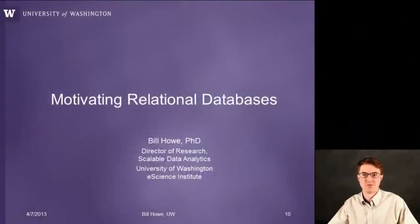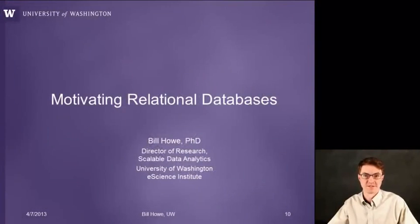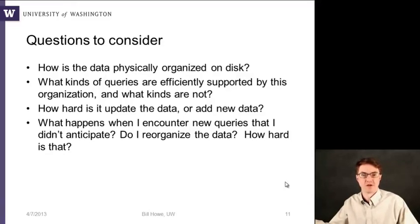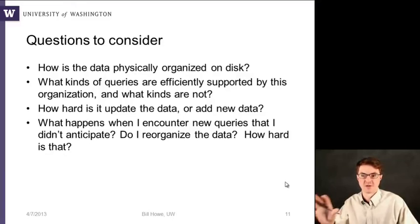Last time we talked about data models and used them to motivate databases and define the term database in a broad sense. Now I want to build on that to talk specifically about relational databases. We talked about questions you could use to reason about different ways of organizing data and evaluate them with respect to your requirements. I want to apply them to examples of different kinds of databases that end up motivating the relational model. The reason I want to go through this historical view is that you see some of these same designs being proposed in NoSQL systems, and some of the same issues — both pros and cons — are still there. So it's good to have a historical perspective when evaluating modern systems.